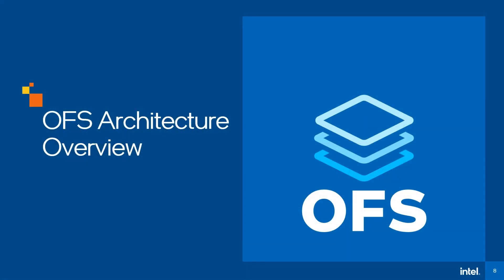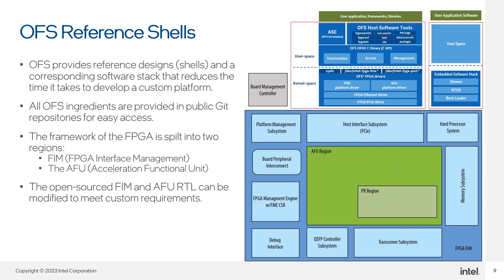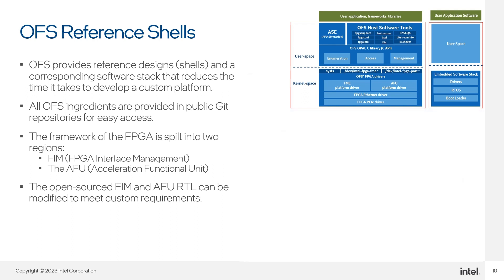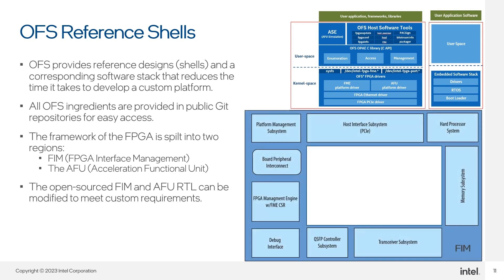OFS reference shells can be leveraged to build custom FPGA workloads. OFS has a software stack that contains kernel drivers and user space tools and libraries to leverage for your custom application. The FPGA contains two regions. First, the FIM, also known as the shell, provides an integrated time-enclosed IO ring, shown in blue here. It includes the most common interfaces used for applications such as PCIe, Ethernet, memory, debug, and QSFP controllers.